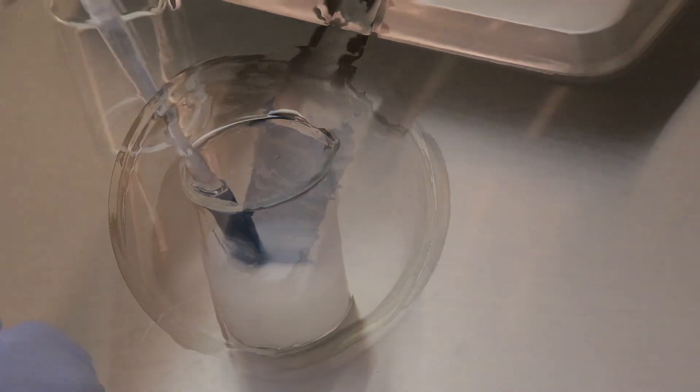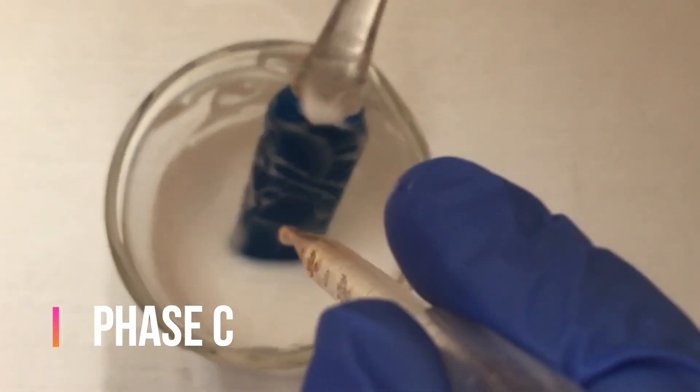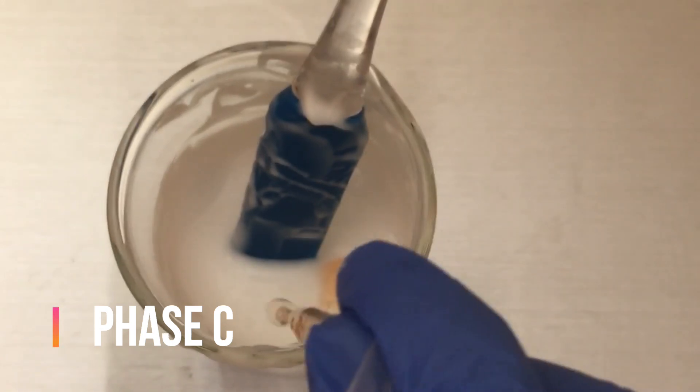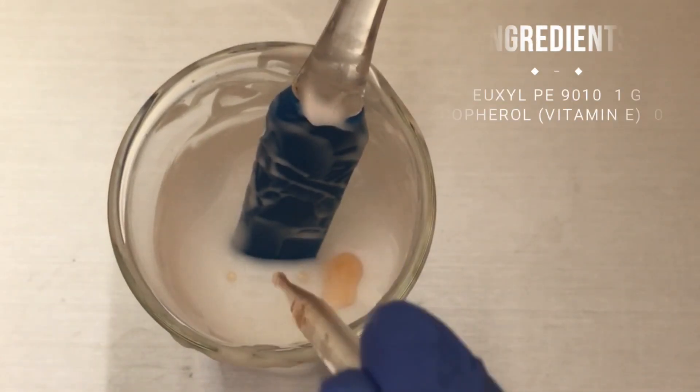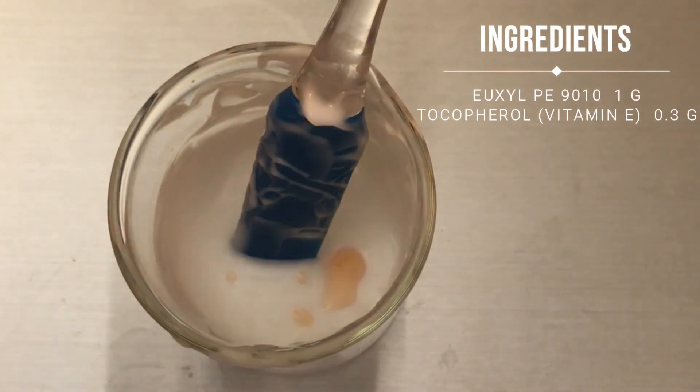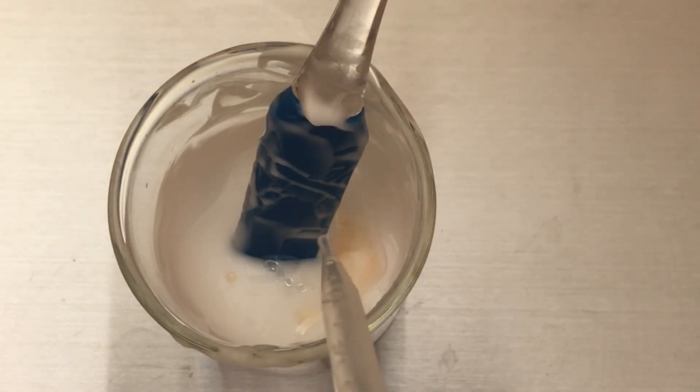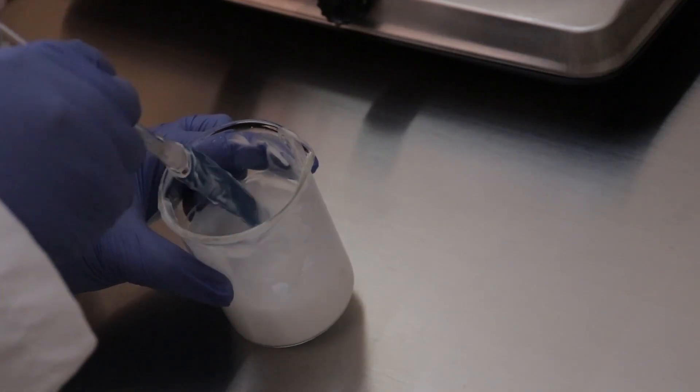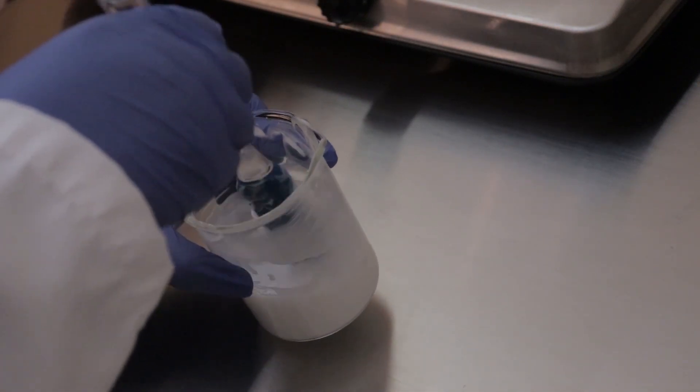Okay, so after we make sure phase AB is homogeneous, we will now add in our phase C ingredients. I am using Euxyl PE 9010 for my preservative, and tocopherol is going to be important especially if you decide to add any plant oils into this formula. Once we add these two ingredients, we're going to continuously mix it until everything's homogenous.